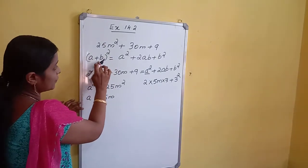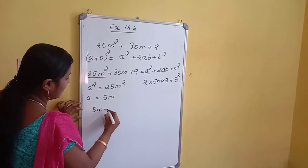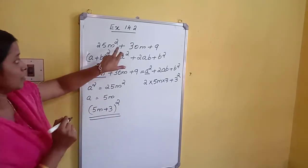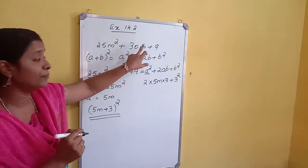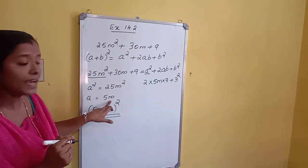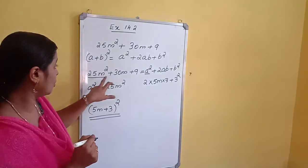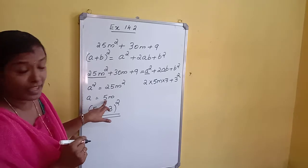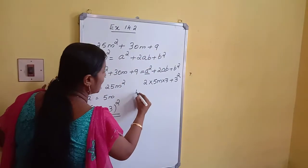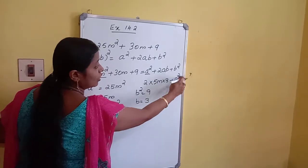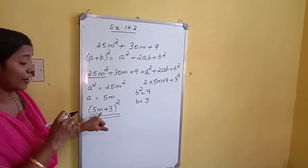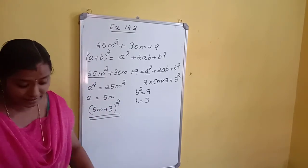Applying the identity: A plus B whole square, where A equals 5M and B equals 3, gives 5M plus 3 whole square. Verification: A squared is 25M squared, 2AB is 2 into 5M into 3 equals 30M, and B squared is 9. So the required factorization of 25M squared plus 30M plus 9 is 5M plus 3 whole square.